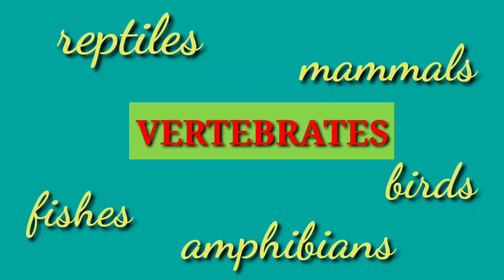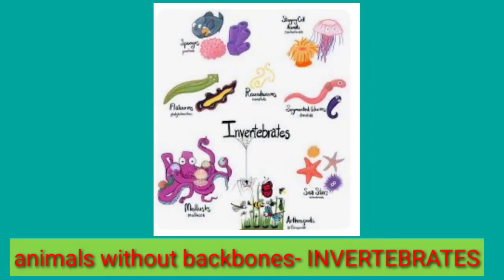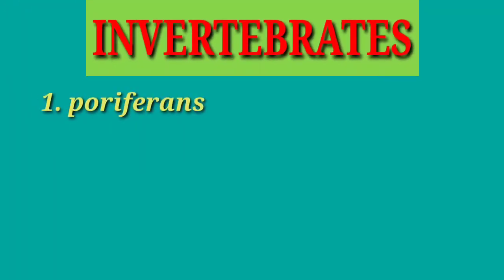Now let us talk about animals without backbones. Some animals do not have backbones; these animals are called invertebrates. Their physical appearance and characteristics differ from vertebrates. Like vertebrates, they can be classified into subgroups. Invertebrates have eight subgroups: the poriferans, coelenterates, platyhelminthes, annelids, nematodes, molluscs, arthropods, and echinoderms.